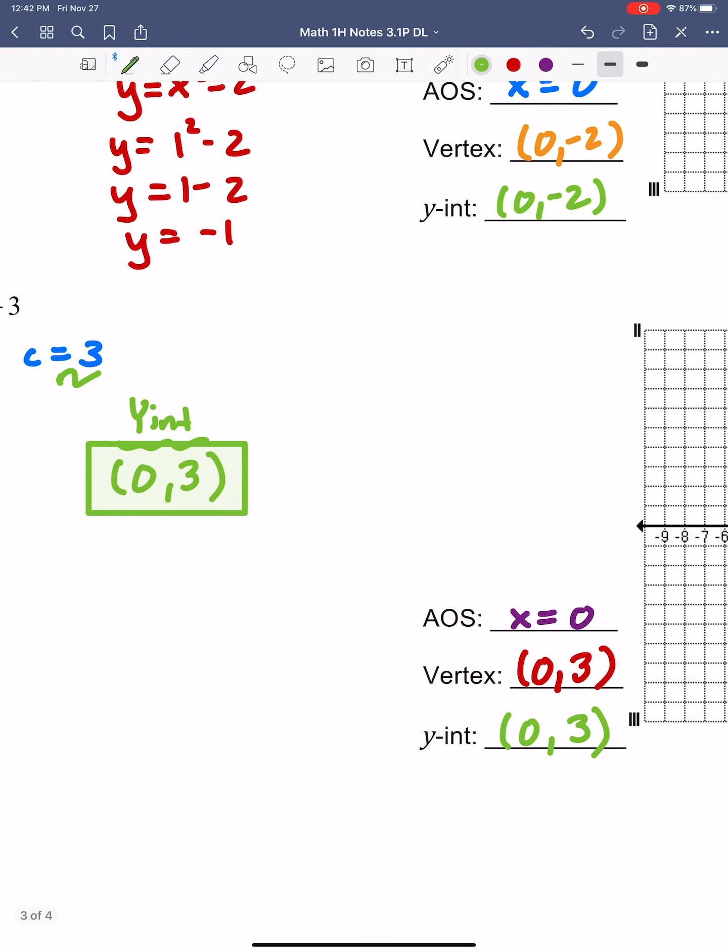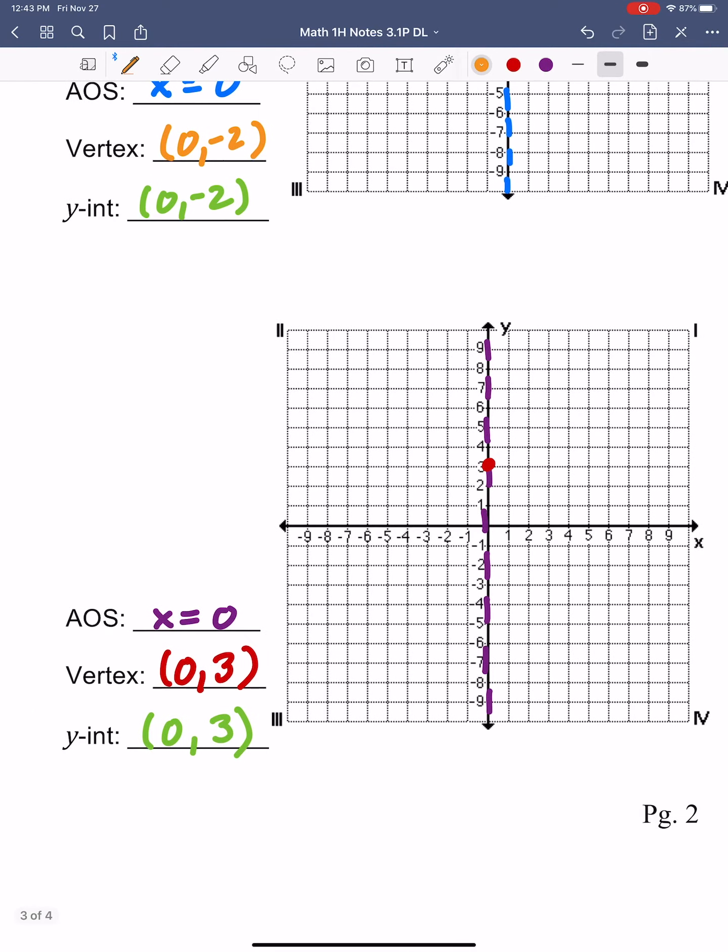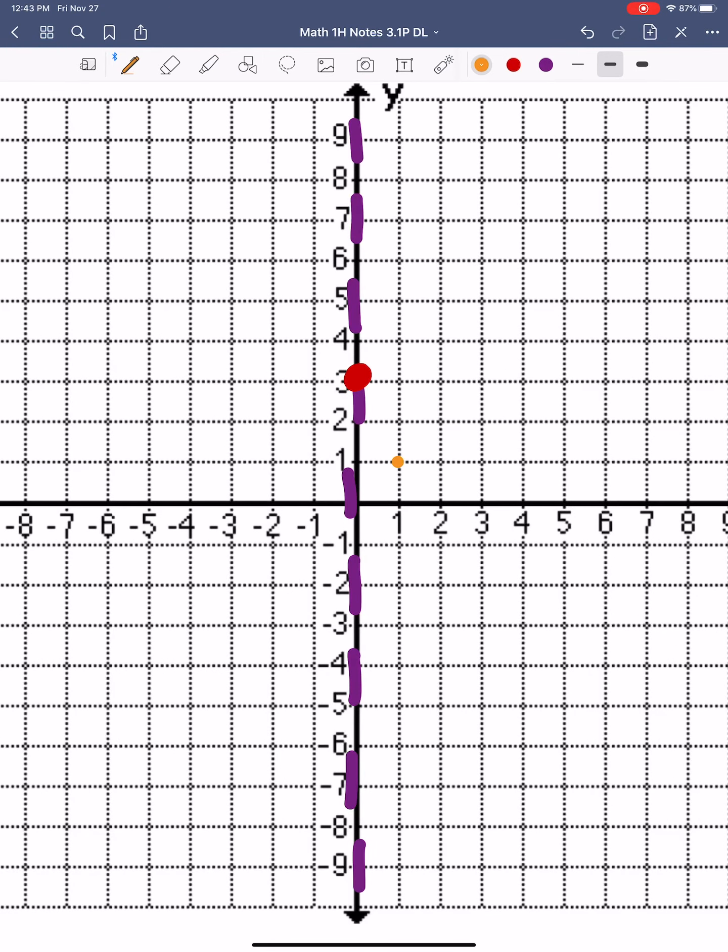But we need some more points, so I'm going to make a table here: x, y. I can pick whatever I want for x. I'll choose 1 again. Then I'm going to plug this into my equation: y equals negative 2 times 1 squared plus 3. So this becomes negative 2 times 1 plus 3. That's negative 2 plus 3, which gives me positive 1. So I'll put that in my table: the point (1, 1).